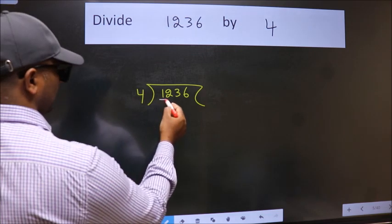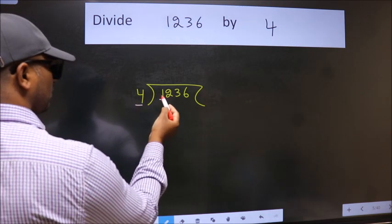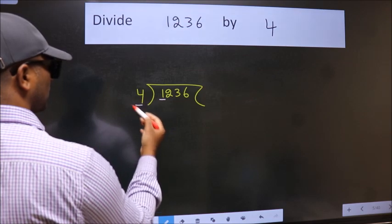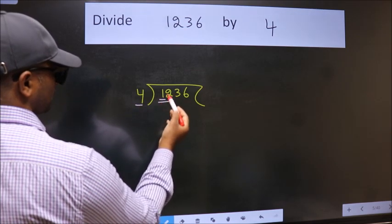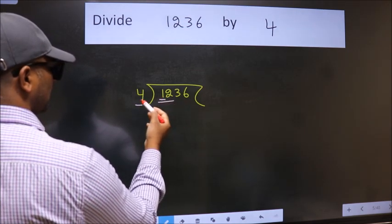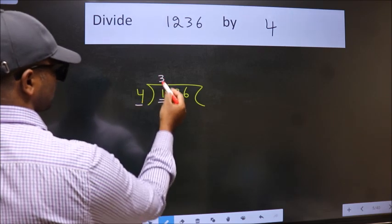Here we have 1. Here 4. 1 is smaller than 4. So, we should take two numbers, 12. When do we get 12 in 4 table? 4 times 3 is 12.